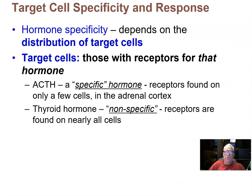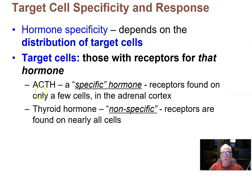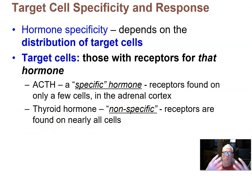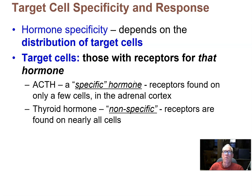Let's talk about the distribution of target cells and the term specificity. A specific hormone, like adrenocorticotropic hormone, only has a small population of target cells in the adrenal cortex — that's the only place it works, so it's called specific due to that narrow range of target tissue. Thyroid hormone, by contrast, works on almost all cells in your body; because its target cells are so broadly distributed, it's called a nonspecific hormone. Note that this use of 'specific' refers to how broadly distributed the target cells are, not to the binding specificity of the receptor itself.